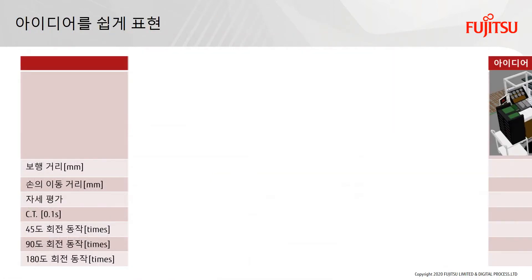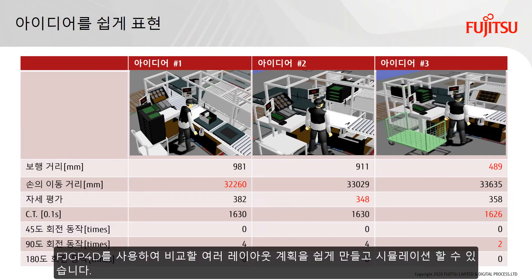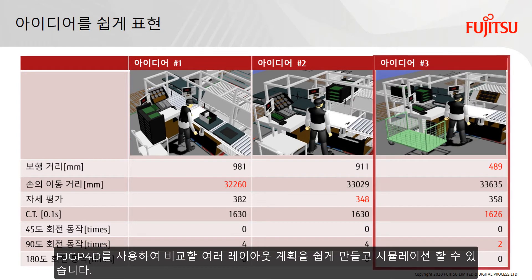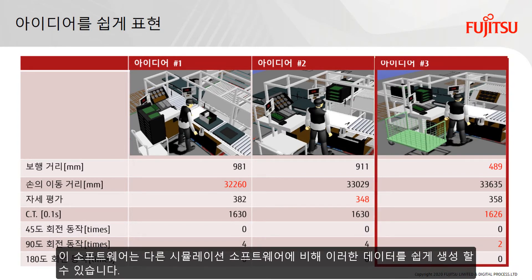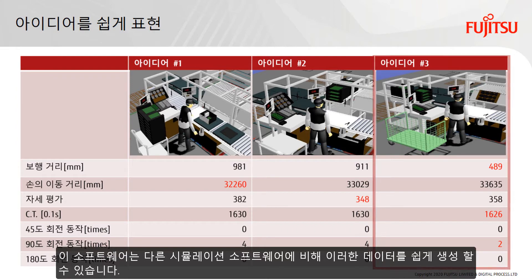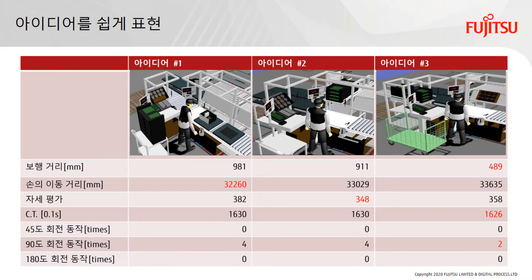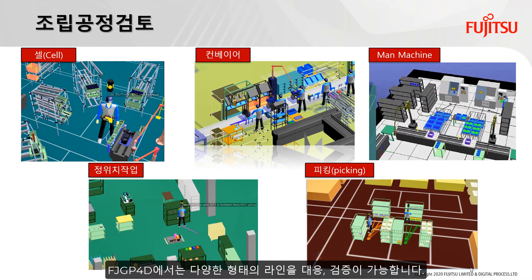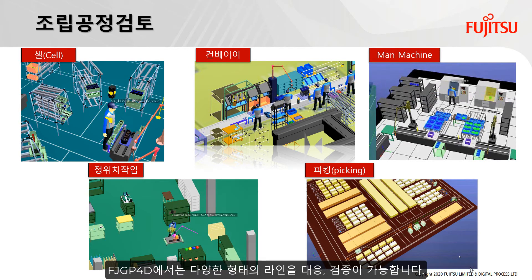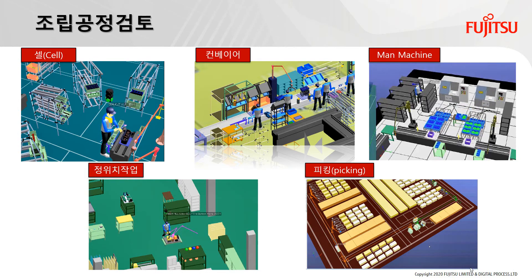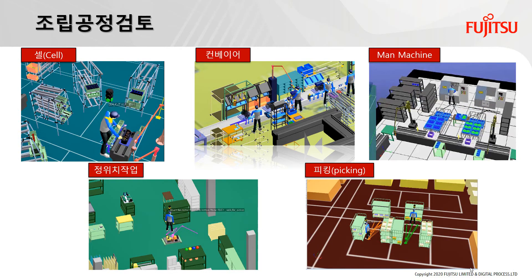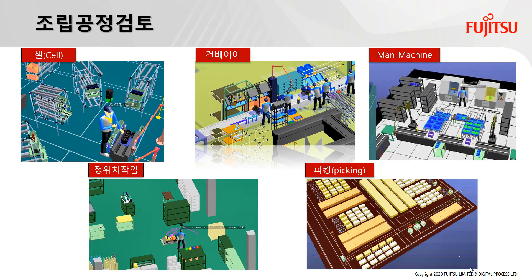You can easily create and simulate multiple layout plans for comparison using FJGP4D. This software can create these data easily compared to other simulation software. FJGP4D can be verified for various production line types — for example, cell, conveyor, man-machine interface, fixed position assembly, and parts supply in the factory.